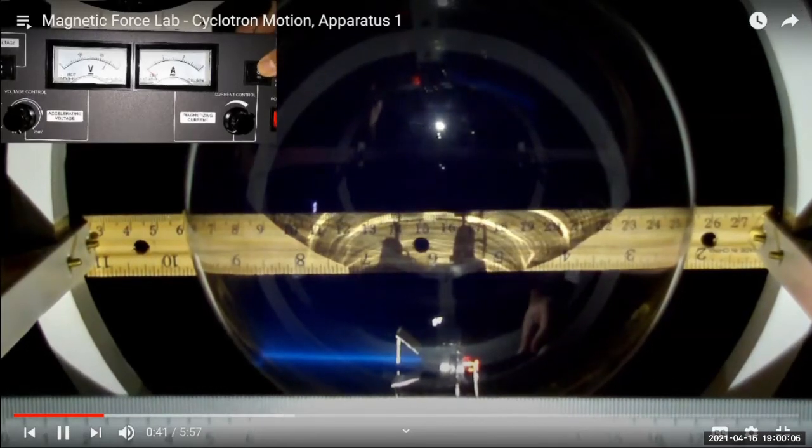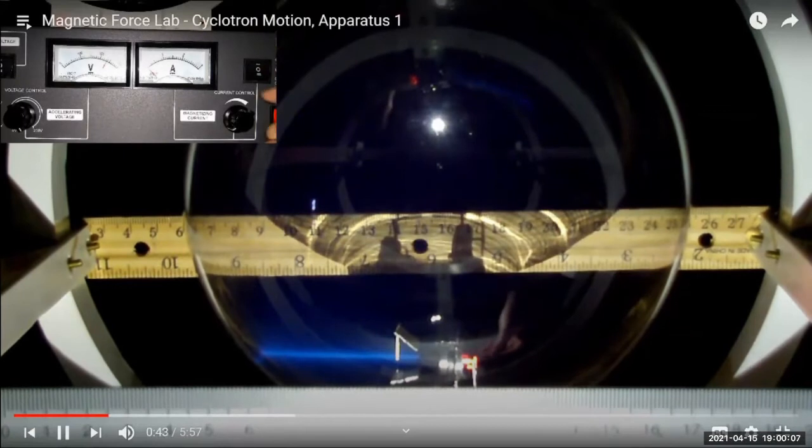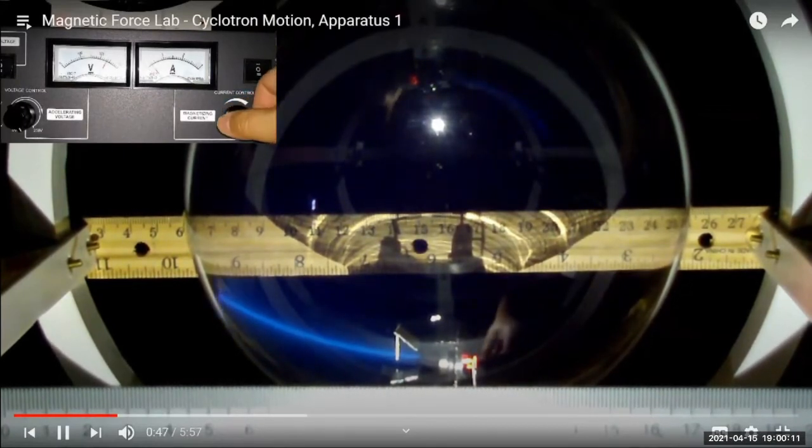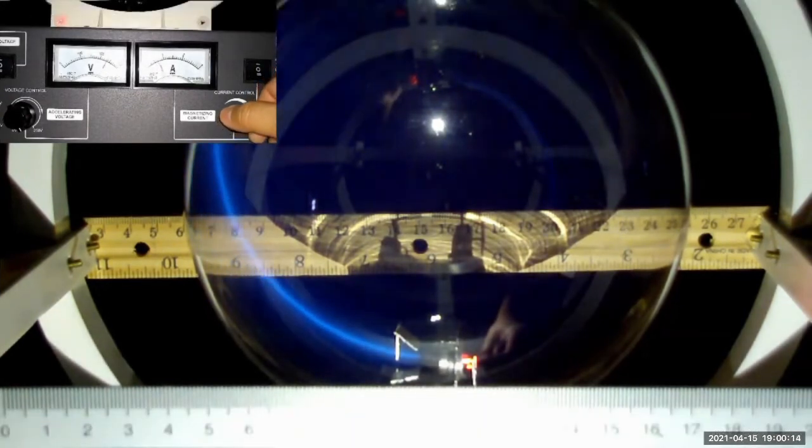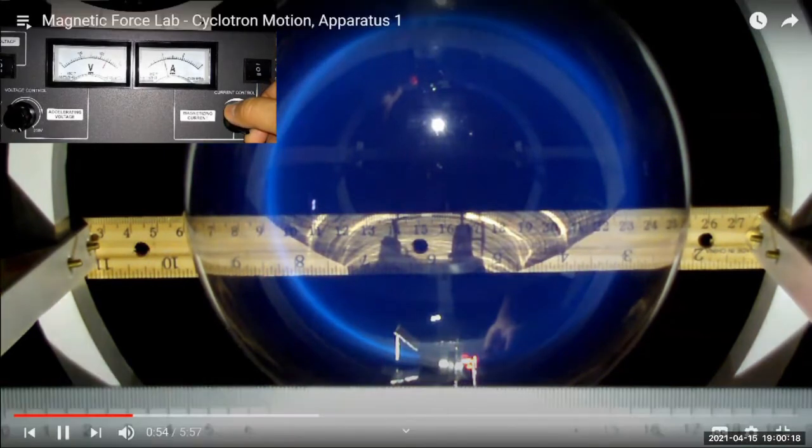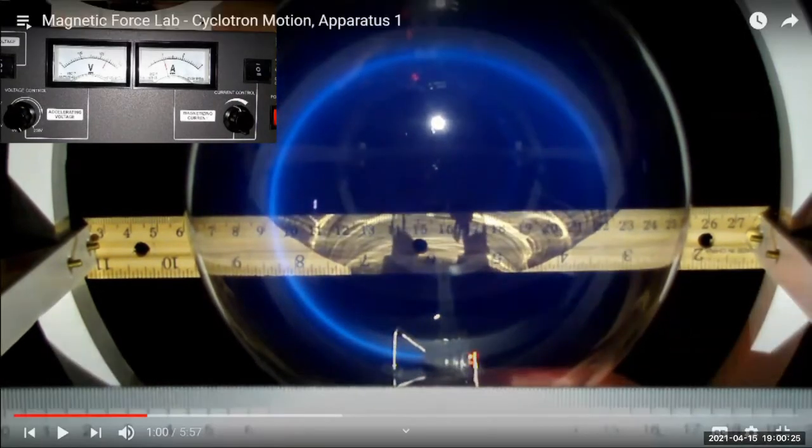We'll turn on the magnetic current, first in the clockwise direction. And let's see what the minimum value of current is that'll give us a circle. About one ampere. So we will set it at one ampere. Now, yeah, so that's the cyclotron motion.